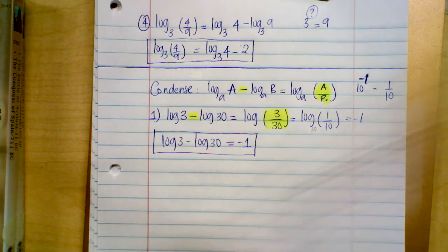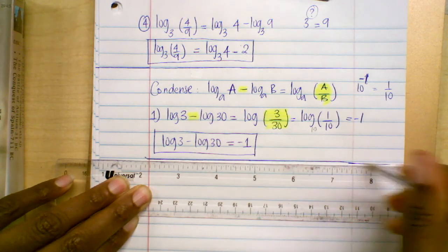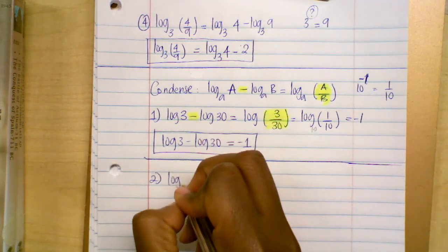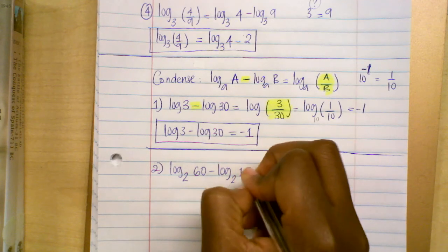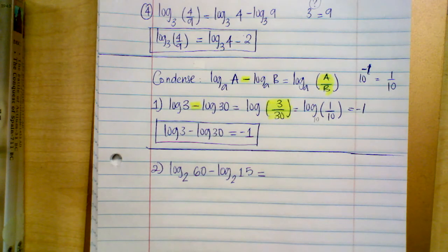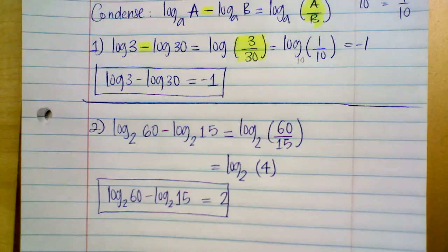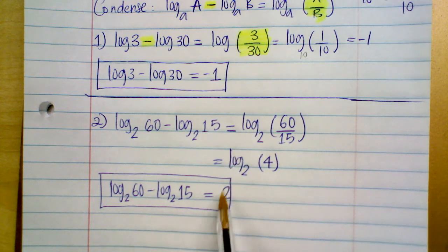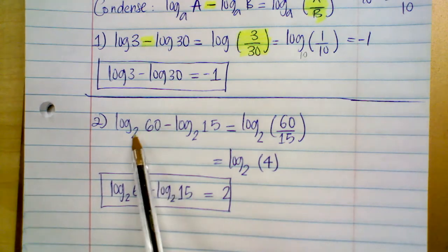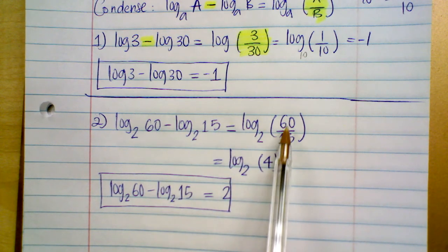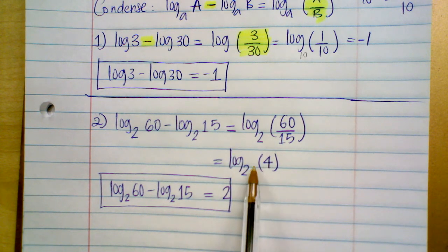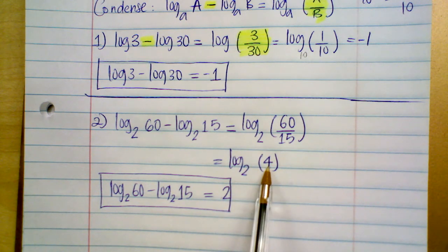For number two: log base two of 60 minus log base two of 15 equals what? They share the same base, so condense to a single log with the ratio: log base two of (60 over 15), which is log base two of four. Log base two of four asks what exponent gives base two an answer of four. Two squared is four, so the answer is two.